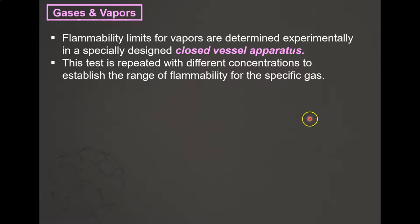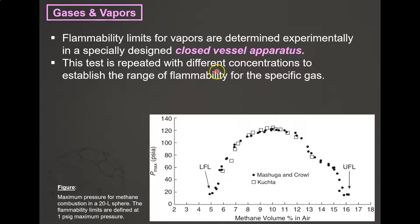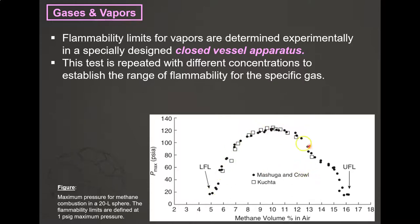That covers liquids. For gases and vapors, flammability limits are determined experimentally in a specially designed closed vessel apparatus. The experiment is repeated with different concentrations until a range of flammability for the specific gas is established. A graph of pressure versus methane volume in air shows the lower flammability limit (LFL) and upper flammability limit (UFL).